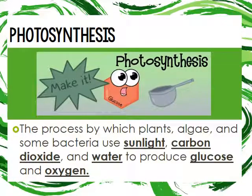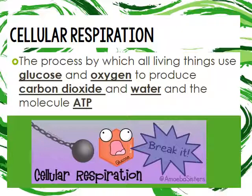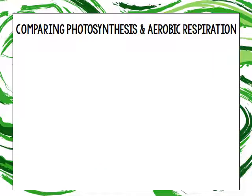For photosynthesis, you are actually making glucose. It's the process by which plants, algae, and some bacteria use sunlight, carbon dioxide, and water to produce glucose and oxygen. Cellular respiration is the total opposite — it's the process by which all living things use glucose and oxygen and produce carbon dioxide, water, and ATP. If photosynthesis is making glucose, then cellular respiration is breaking it down.